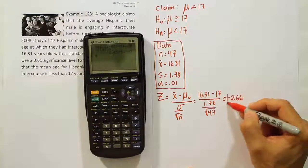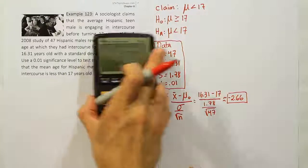And you get negative 2.66 if you round it off to two decimal places. So it's approximately negative 2.66.